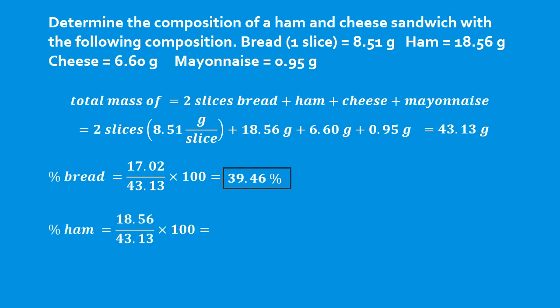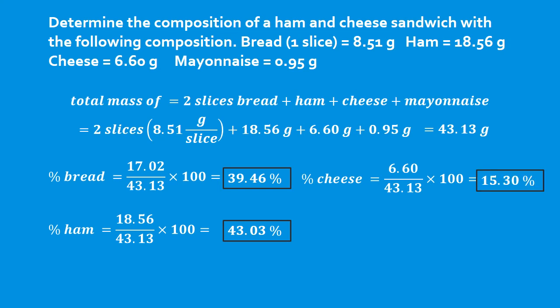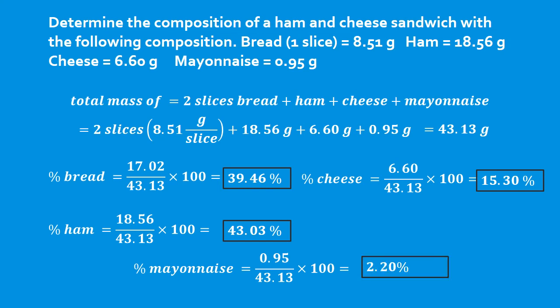Percent ham: the mass of the ham — 18.56 — divided by 43.13, times 100, gives us 43.03%. Percent cheese: 6.60 divided by 43.13 times 100 gives us 15.30%. For the percent mayonnaise: 0.95 grams divided by the total mass of 43.13, times 100, gives us 2.20%. Remember, when you add your percentages together, they will add to 100.